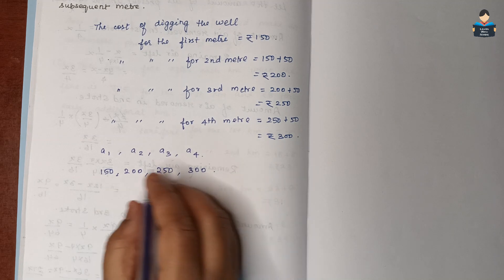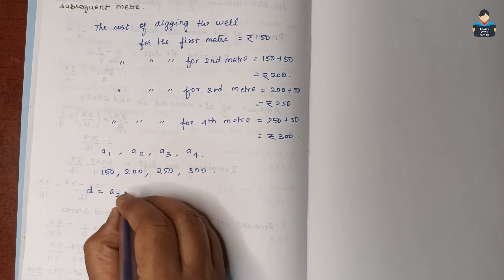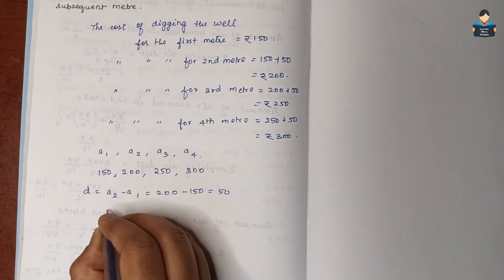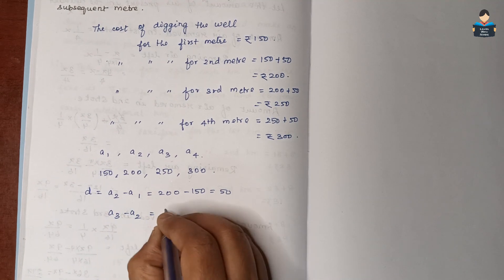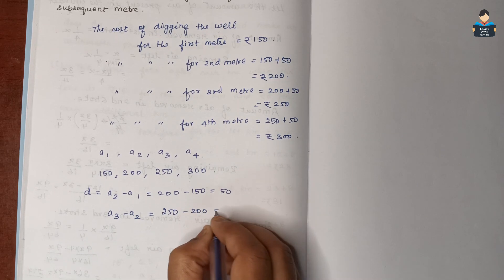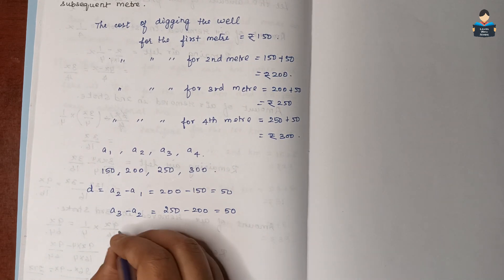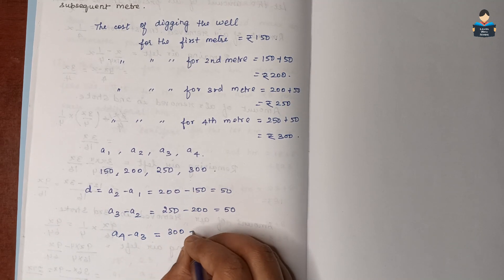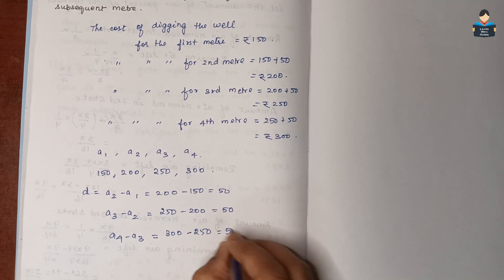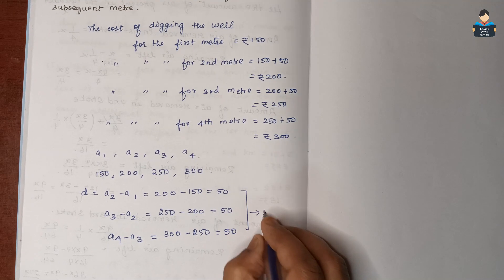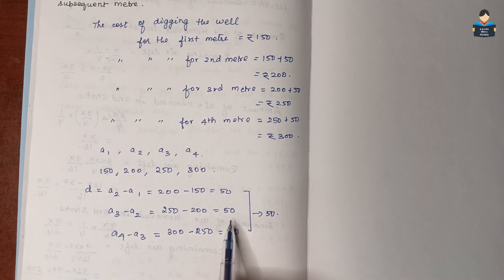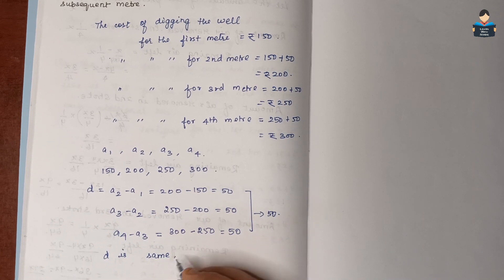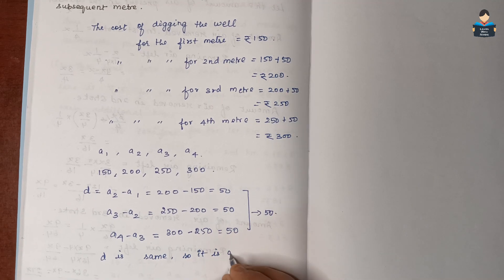Now we find out the common difference. A2 minus A1 is 200 minus 150 which is 50. A3 minus A2 is 250 minus 200 which is 50. The D value is the same throughout, equal to 50. Therefore, it is an AP.